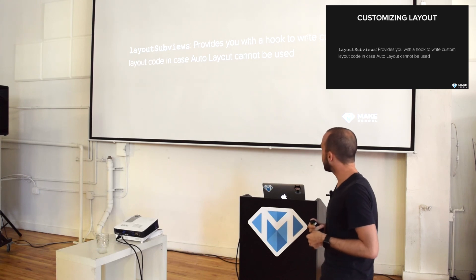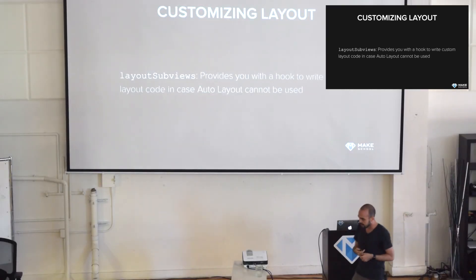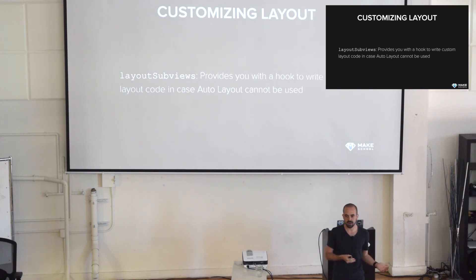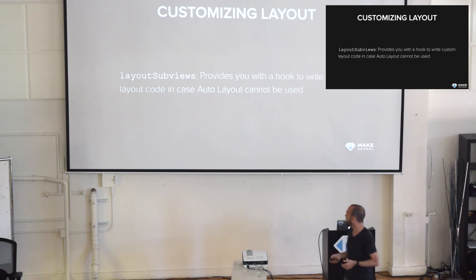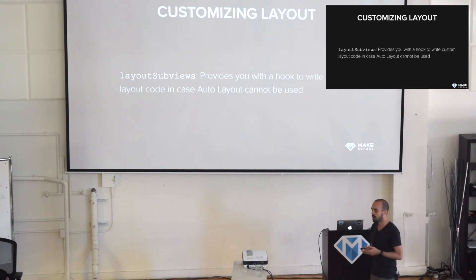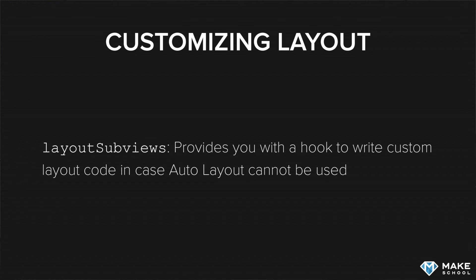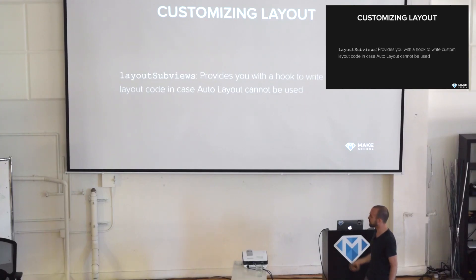The last thing about customizing layouts: if you have a use case where auto layout is not good enough, or where it's very complicated to express your layout using auto layout, then you have a chance of manually positioning subviews in your custom views by overriding the layoutSubviews method. That's where you can actually just change the frames of the subviews of your current view. For example, if you have a view with two labels and you want to position them manually, not using auto layout, you would override layoutSubviews and change the frames of those views within that method. That is the only place where you should be doing that.